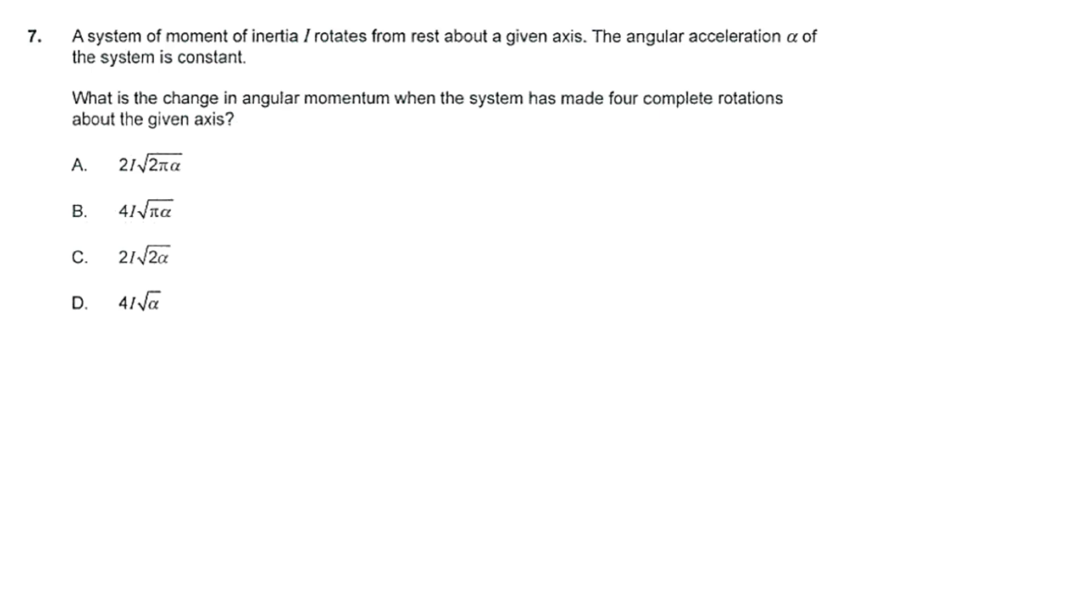What is angular momentum? That is equal to the moment of inertia times the angular velocity. So that means that the change in angular momentum, which is what we're trying to find for this question, is equal to the final angular momentum minus the initial angular momentum. In our case, the initial angular momentum is going to be zero because we are starting from rest.